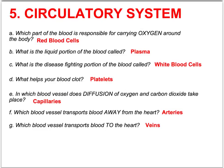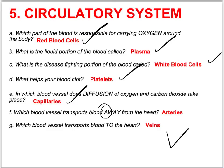For the circulatory system: red blood cells carry oxygen. The liquid portion is called plasma. Disease-fighting cells are called white blood cells. Platelets help your blood clot. Capillaries are the blood vessels where diffusion of oxygen and carbon dioxide takes place — they're the very small vessels. Arteries carry blood away — 'away' starts with an 'a.' Veins transport blood back — the 'v' kind of looks like a boomerang, so think of it as coming back.